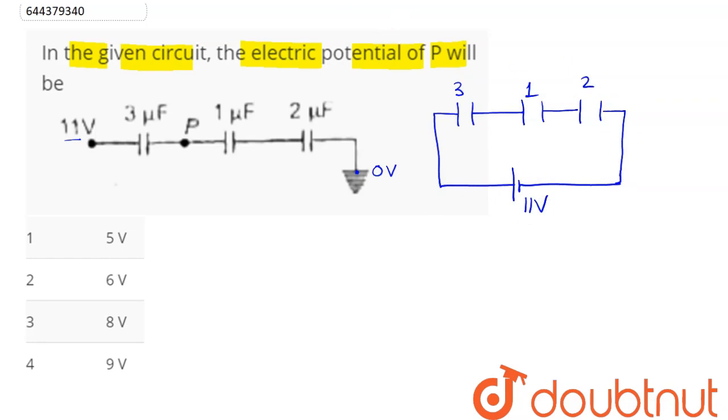Now we need to find the potential of point P, which is the point between 3 and 1 microfarad capacitor. Here 11 volt means this will be 11 and this will be 0.